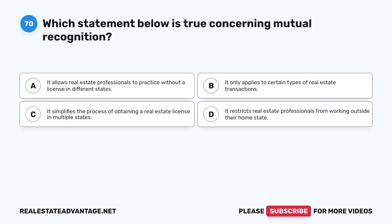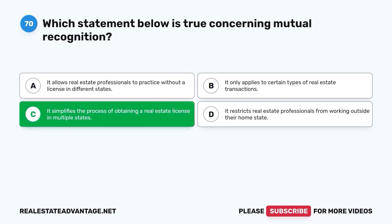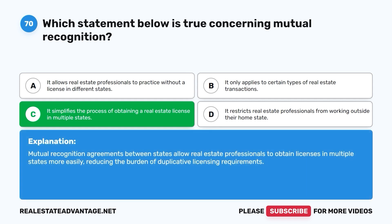Question 70. Which statement below is true concerning mutual recognition? A. It allows real estate professionals to practice without a license in different states. B. It only applies to certain types of real estate transactions. C. It simplifies the process of obtaining a real estate license in multiple states. D. It restricts real estate professionals from working outside their home state. The correct answer is C. Mutual recognition agreements between states allow real estate professionals to obtain licenses in multiple states more easily, reducing the burden of duplicative licensing requirements.